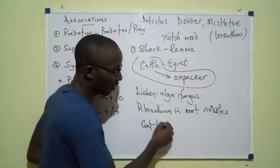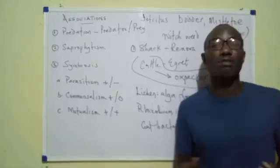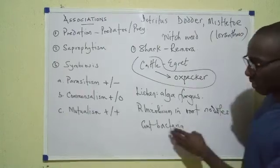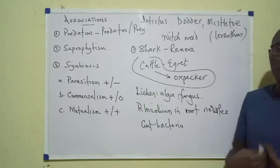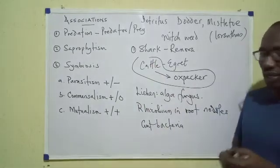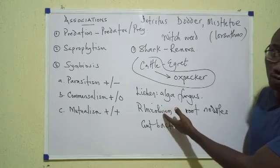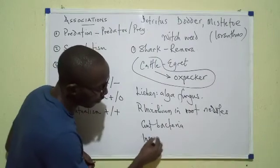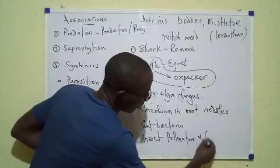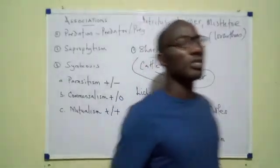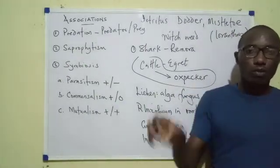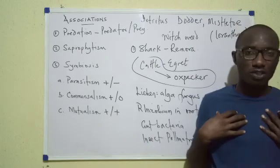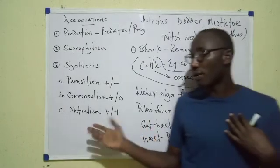We also have gut bacteria — bacteria found in the digestive system of herbivores. When herbivores feed on grass, these bacteria help them digest it. The bacteria in turn get free housing, staying inside the host's digestive system and protected from the harsh outside environment. A final example is insect pollinators and flowers. Insect pollinators visit plants to feed on nectar — that's their benefit. But in doing so, they transport pollen grains from plant to plant, which benefits the plant. That's another example of mutualism.